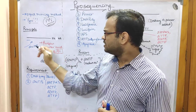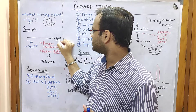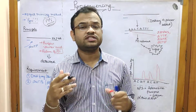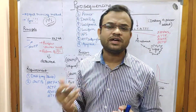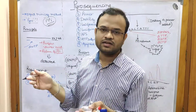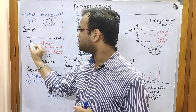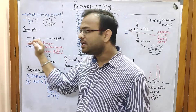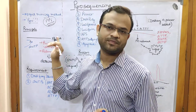Coming to the principal section: suppose you have a single-stranded DNA whose sequence you need to know. Whenever you use a polymerase and a primer, the polymerase will start at the 3′ end of the primer and begin adding new nucleotides at that 3′ end.